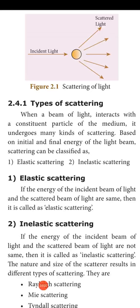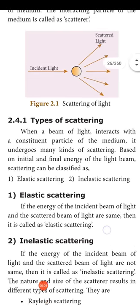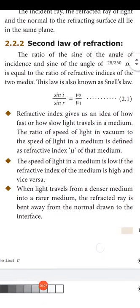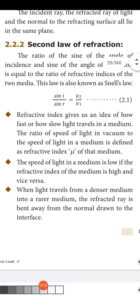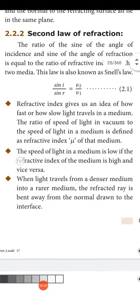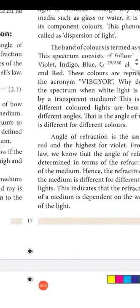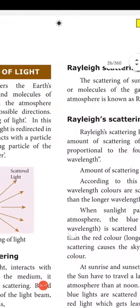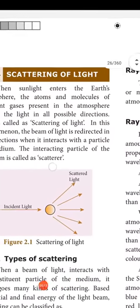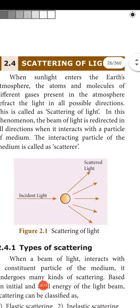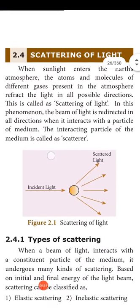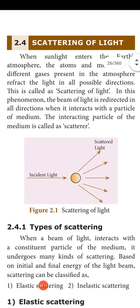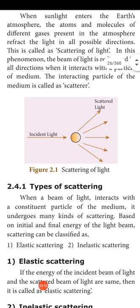Dear students, today we start the lesson from types of scattering. In our previous classes we have discussed about refraction of light, dispersion of light and scattering of light. I have given an intro on scattering of light. Now let's discuss about types of scattering.